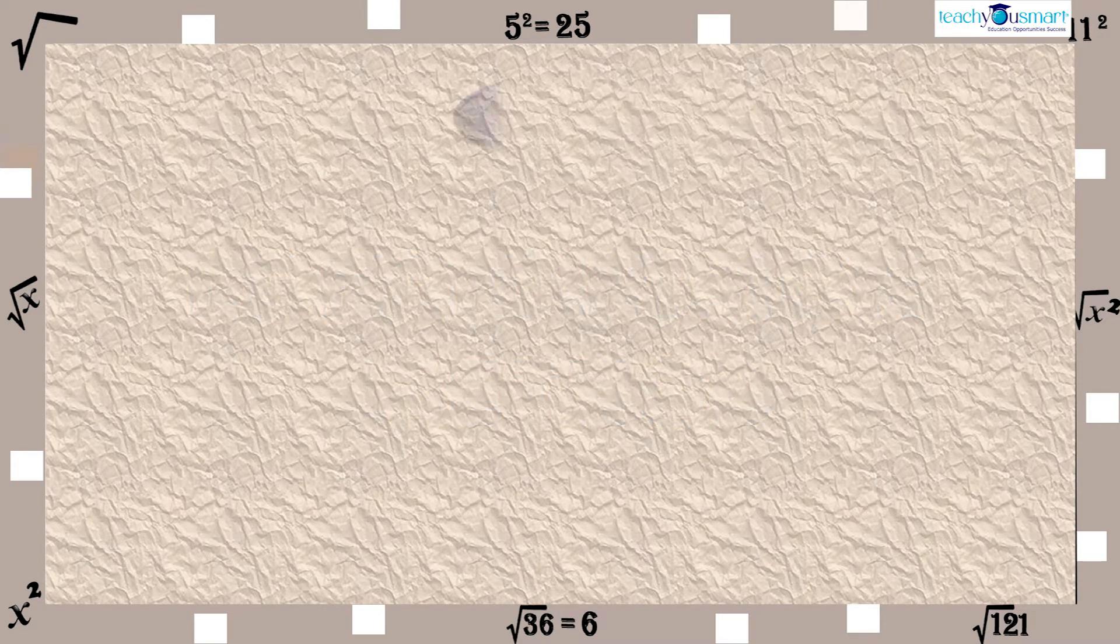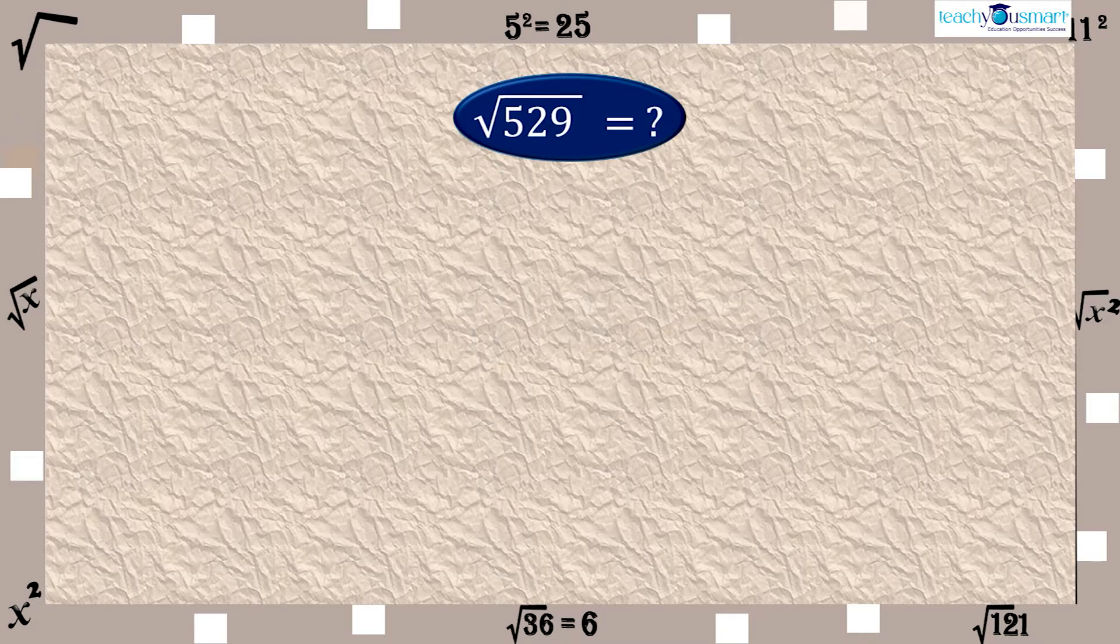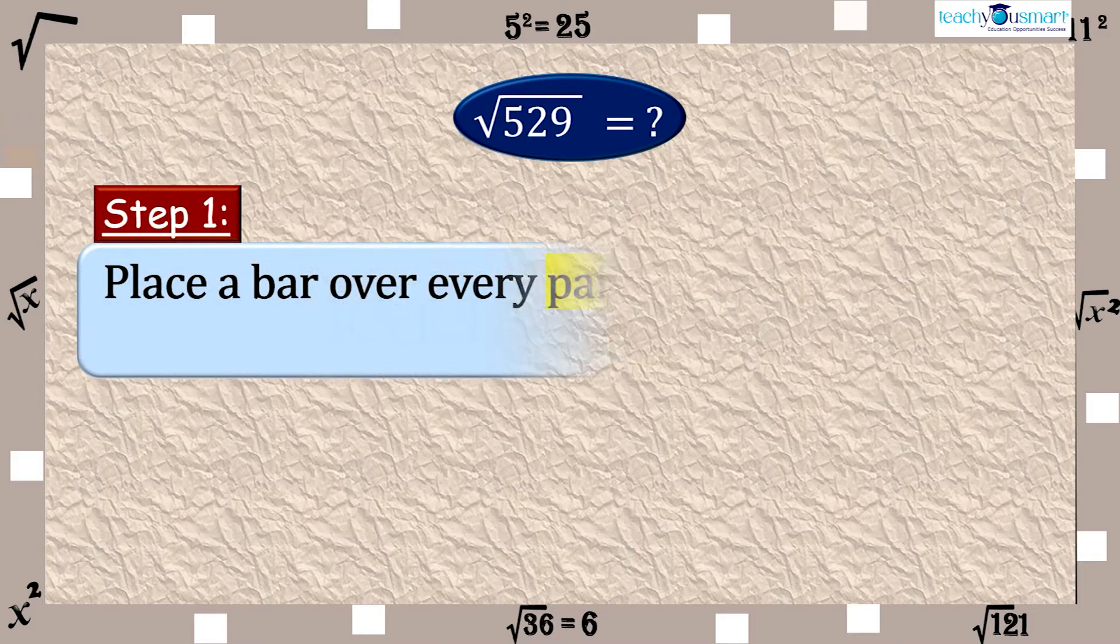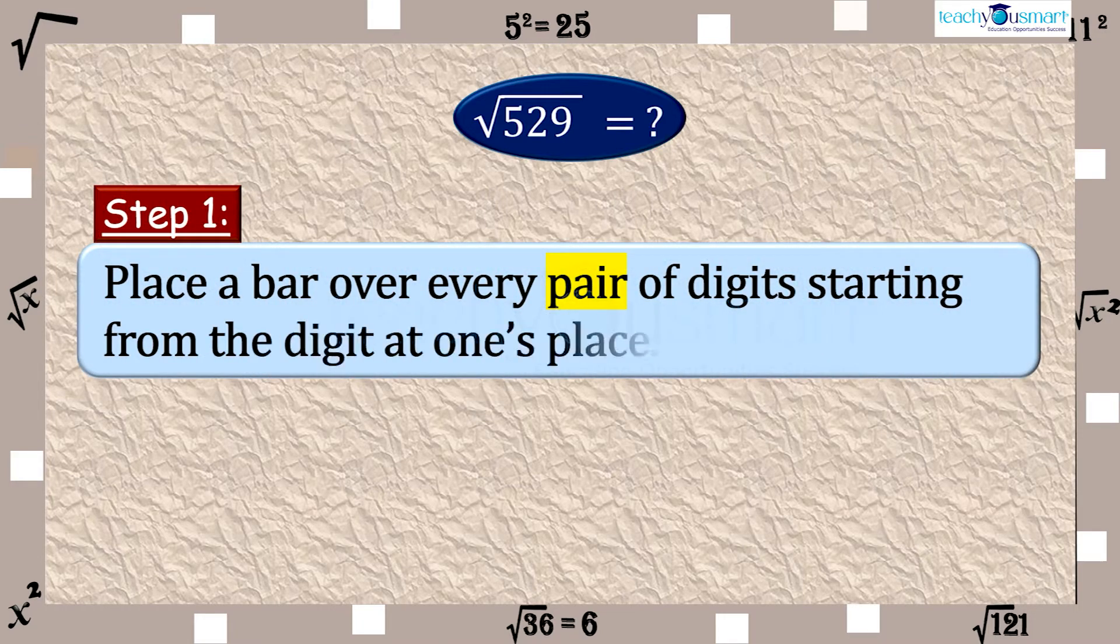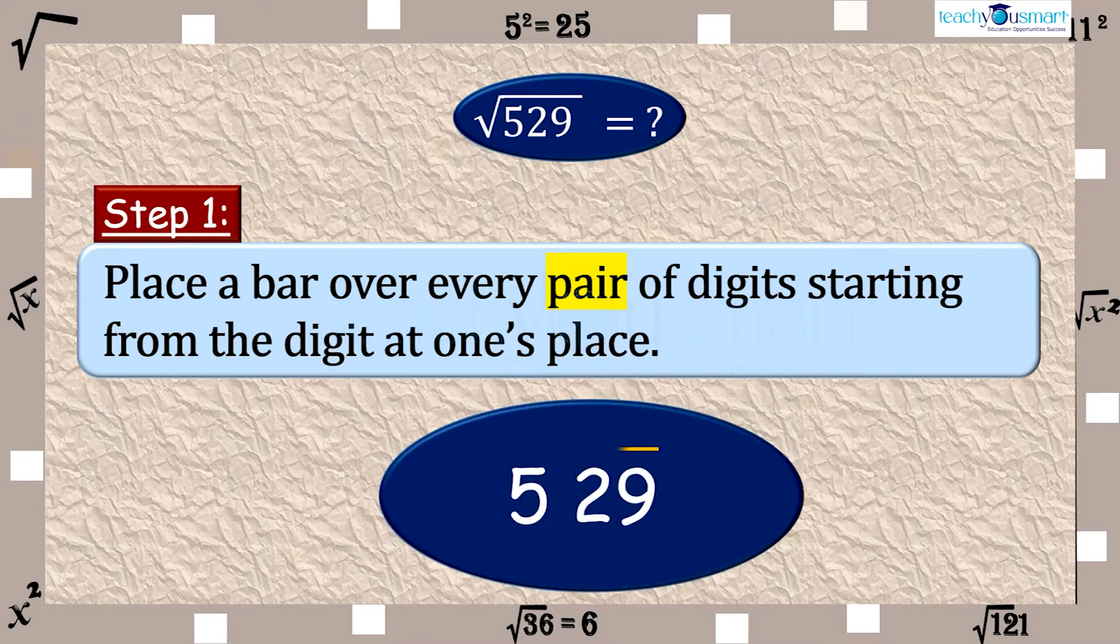Take a look at the following steps to find the square root of 529. Step 1: Place a bar over every pair of digits starting from the digit at one's place.